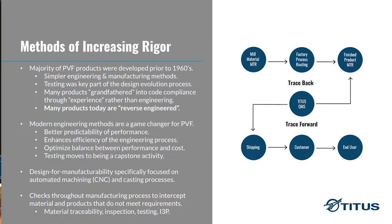Before talking about how to increase rigor, it's important to understand that a lot of these products — groove, hammer unions, a lot of the forged steel stuff — were all developed prior to the 1960s. Engineering and manufacturing methods employed with them were very simple. Grooved stuff traces its roots back to pre-World War I. Hammer unions go back to the late 40s and early 50s. Forged steel threaded with MPT is around the turn of the century. Engineering calculations were not as common then as they are today, and manufacturing processes like casting and machining were 100% manual and very labor intensive.